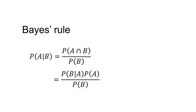The formula for Bayes' rule is: the probability of A given B equals the probability of A and B divided by the probability of B, which equals the probability of B given A times the probability of A, divided by the probability of B.